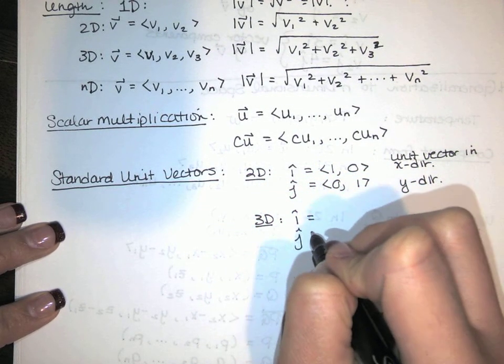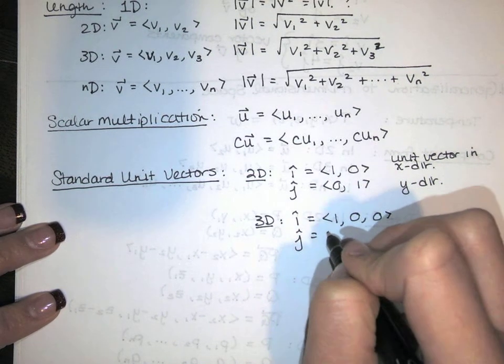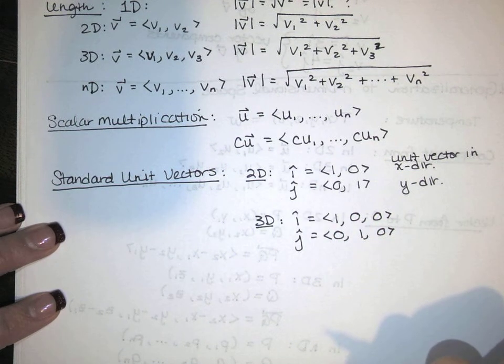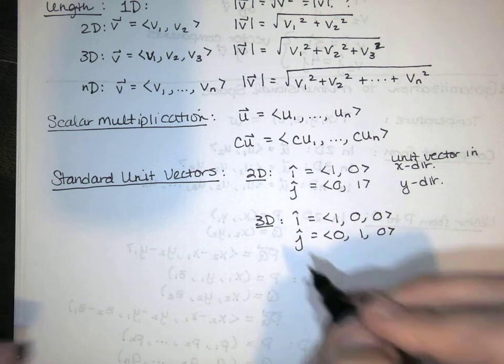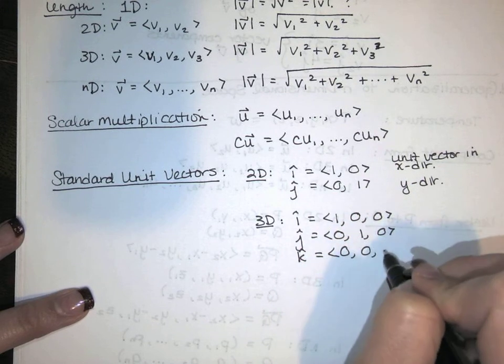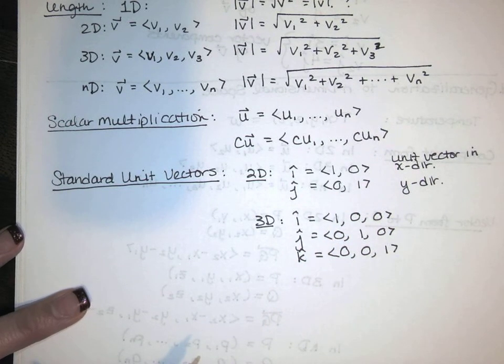3D. Same thing. Got a unit vector in the x-direction, but now my vector has three components. And then I have the unit vector in the y-direction, but now my unit vectors have three components. And then I'm also going to have one in the z-direction. It's one unit long, and it points in the z-direction. It has three components.